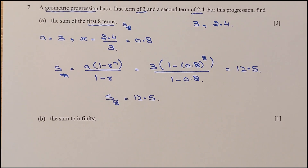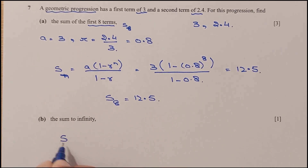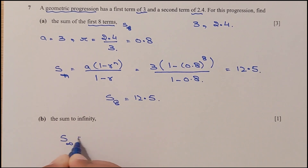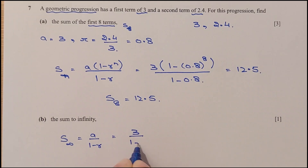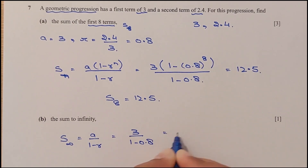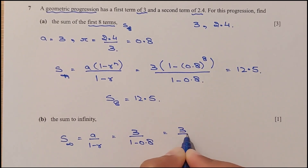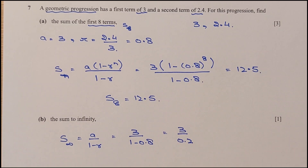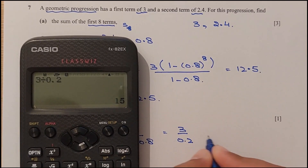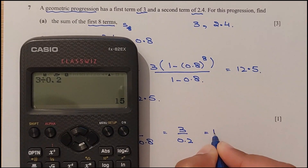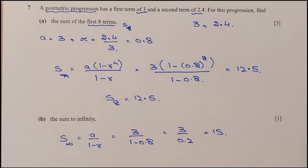For Part B, find the sum to infinity. S infinity equals A over (1 minus R) equals 3 over (1 minus 0.8) equals 3 over 0.2 equals 15.